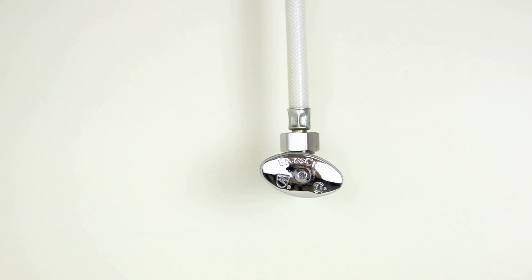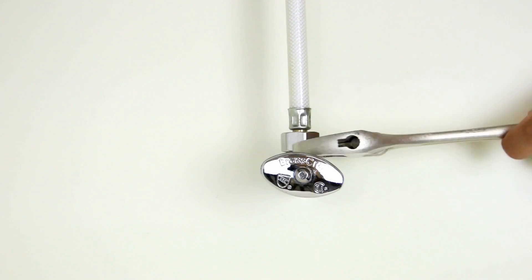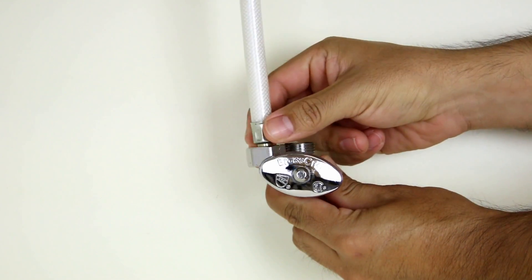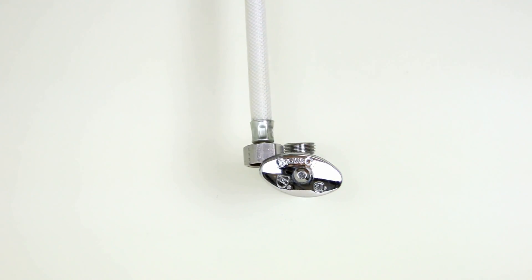For standard installation on a flex line riser, loosen the nut and separate the cold water riser tube from the cold supply shutoff valve. Gently bend the riser tube so that the feed water adapter fits onto the shutoff valve.